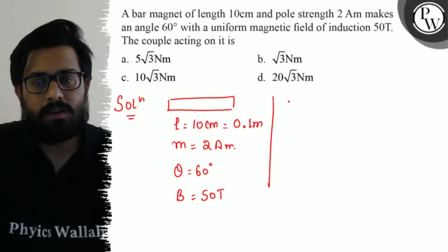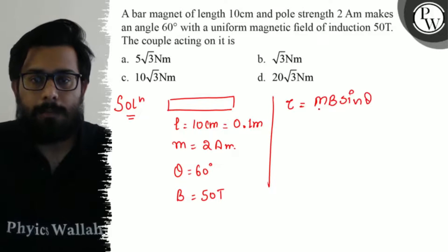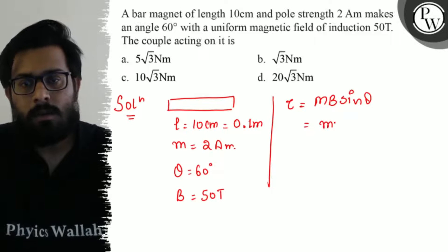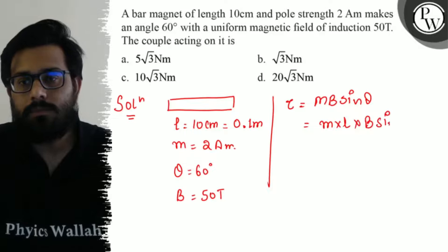Couple, that is torque, comes out to be MB sine theta. The magnetic moment is pole strength into length into B sine theta.